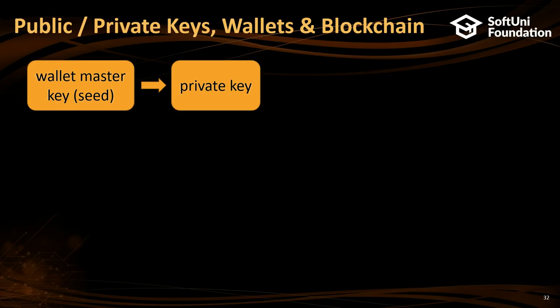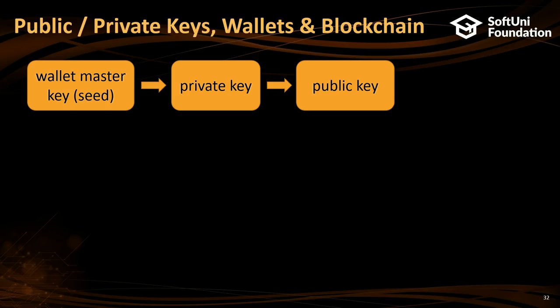So if you make one thousand transactions, you will have at least one thousand and one different private keys and different addresses, which all stay in the same wallet. Usually people have many addresses on the blockchain, not just one, because it is insecure — at least for quantum cryptography. If you have the private key you can calculate the public key, which is true for elliptic curve cryptography, and from the public key you can do some hashing and calculate the address. Some blockchains use just the public key as the address.